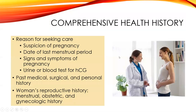A lot of women come in because they're suspicious they're pregnant or have taken a pregnancy test and need confirmation. We hope she knows the date of her last menstrual period. Physician offices will use a blood test for human chorionic gonadotropin, HCG, the hormone produced during pregnancy. We're looking at her past medical, surgical, personal, and reproductive history — including any miscarriages, abortions, gynecological history, sexually transmitted infections, family history, and genetic problems.